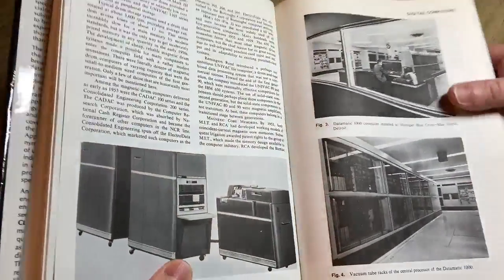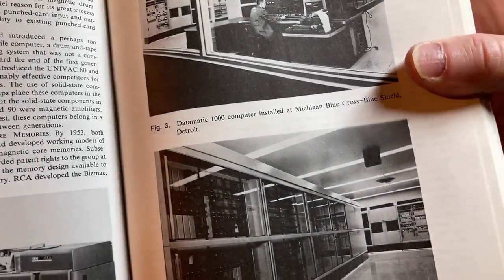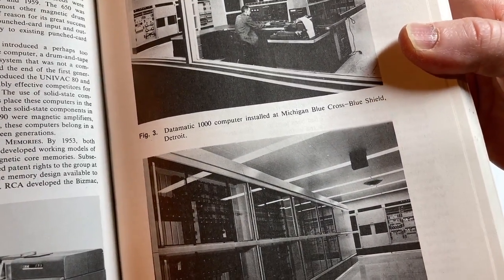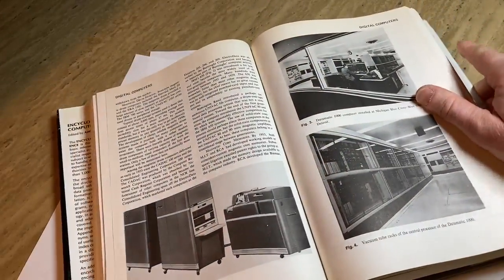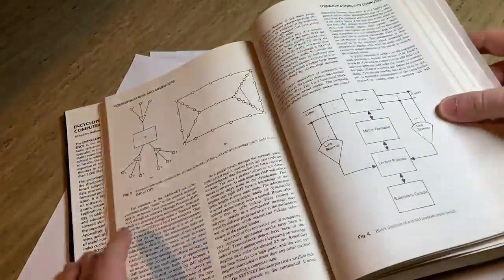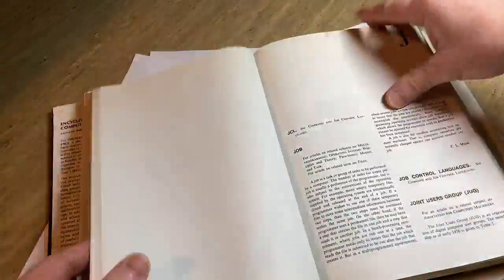Look at this. This is interesting. Datamatic 1000 computer installed at Michigan Blue Cross Blue Shield Detroit. Encyclopedia of Computer Science. What a thick book. Let's go back to the mathematics, see if we can see anything else interesting.